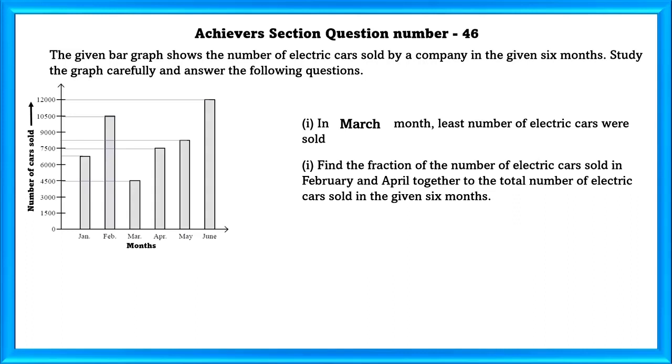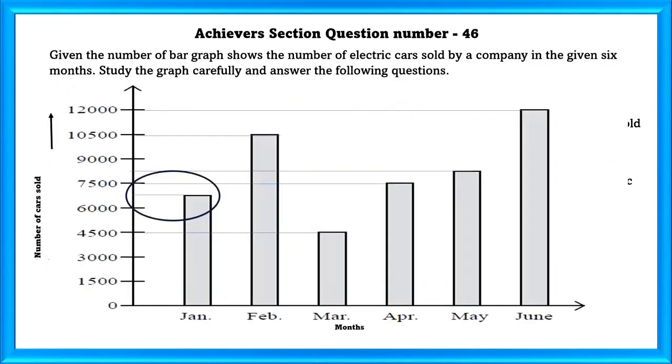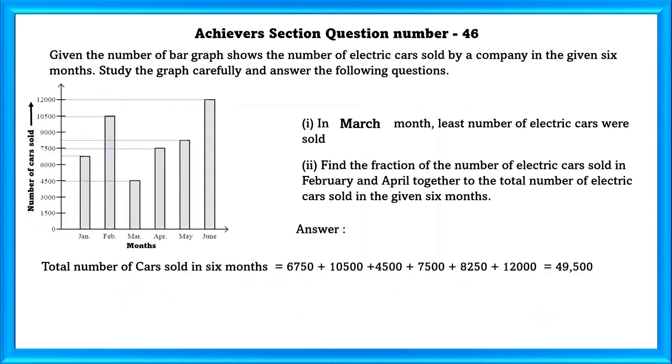Find the fraction of the number of electric cars sold in February and April together to the total number of electric cars sold in the given 6 months. Total number of cars sold in 6 months. This scale is increasing by 1500. In January, it is in the half of 1500 which is equal to 750. So in January, 6,750 cars were sold. Similarly, we will write all the number of cars sold in all these months and they add up to 49,500. Total number of cars sold in February and April which is equal to 18,000. Fraction of cars sold is equal to 18,000 by 49,500 which is equal to 4 by 11.